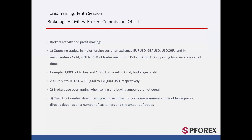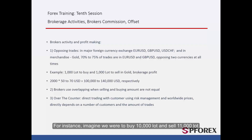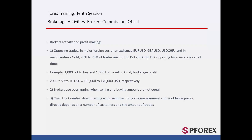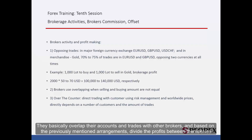Overlapping. Brokers have arrangements with one another and based upon these they manage their customers' accounts. For instance, imagine we were going to buy $10,000 lots and sell $11,000 lots — there is a difference of $1,000 lots. What the broker does now is overlapping: they overlap their accounts and trades with other brokers and, based on the previously mentioned arrangements, divide the profits between themselves.